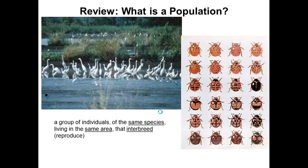Just reviewing: we spoke about microevolution and small changes, and our unit of evolution is a population. A population is a group of individuals of the same species living in the same area that can interbreed and reproduce viable and fertile offspring.